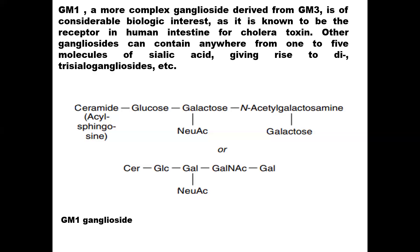Structurally, GM1 ganglioside consists of ceramide — which is acyl sphingosine, meaning sphingosine attached to a fatty acid residue — followed by glucose, then galactose, then N-acetylgalactosamine, then galactose. The middle galactose molecule is also attached to N-acetylneuraminic acid (sialic acid).